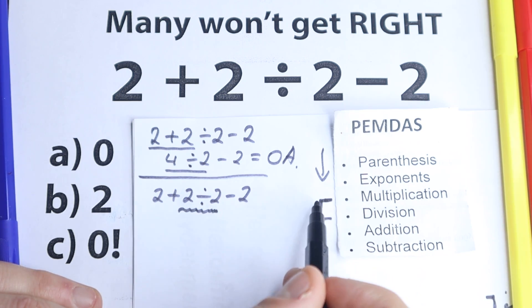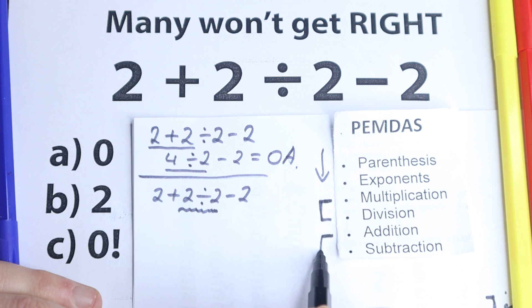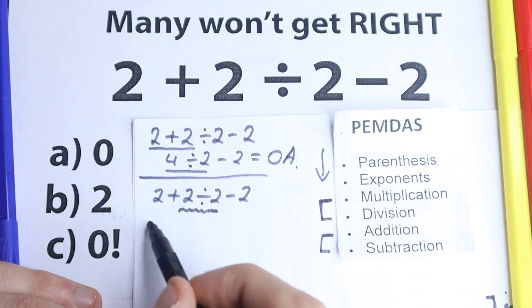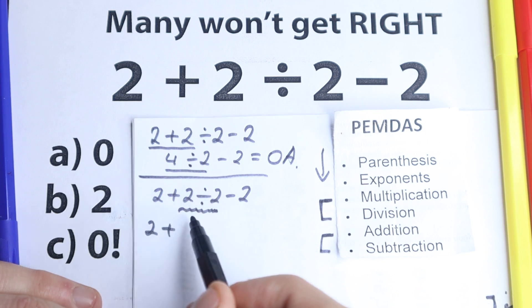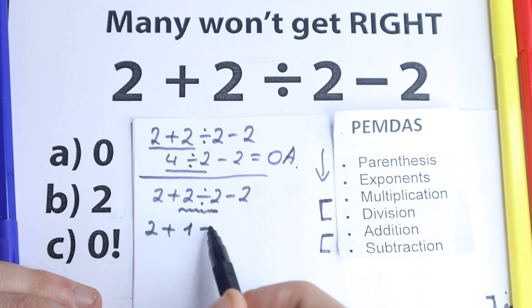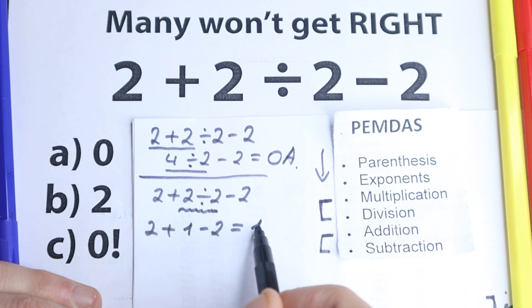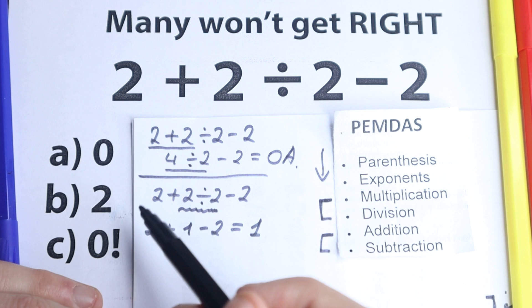And as you can see, division and multiplication is before addition and subtraction. So we need to start with this division. So we have 2 plus 2 divided by 2 equal to 1, and 1 minus 2 in the end. So we have 2 plus 1, that's 3, 3 minus 2 equal to 1.